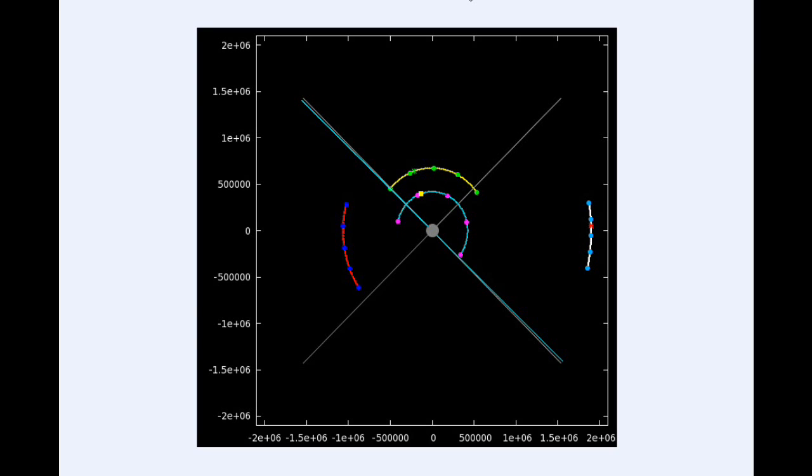The large gray circle in the center of the image is the location of Jupiter itself, not to scale. The axes are in units of kilometers.